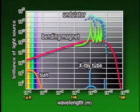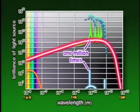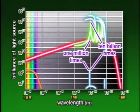Using these undulators, Spring 8 produces X-ray beams 1 billion to 10 billion times brighter than those from conventional X-ray tubes.